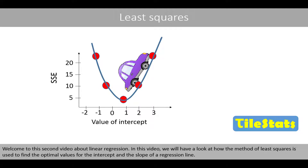Welcome to this second video about linear regression. In this video we have a look at how the method of least squares is used to find the optimal values for the intercept and the slope of a regression line.